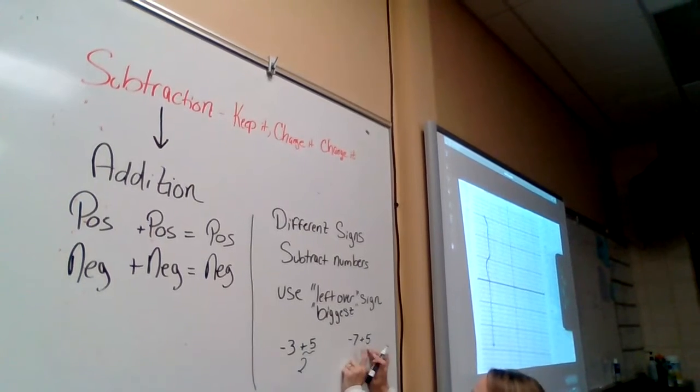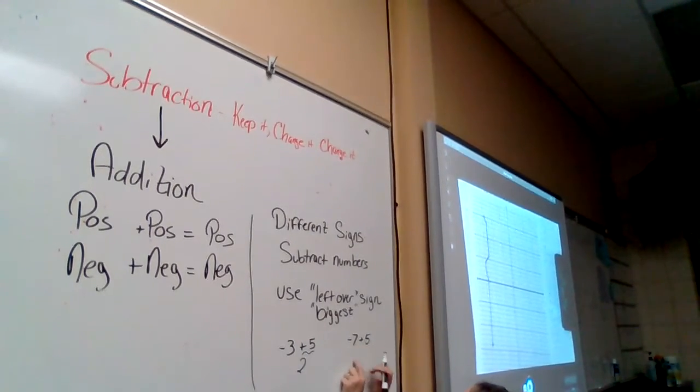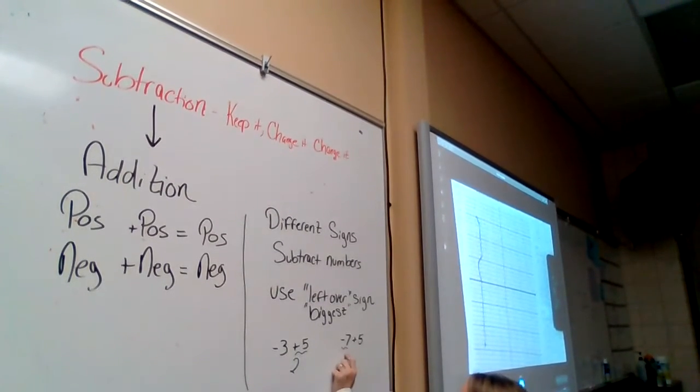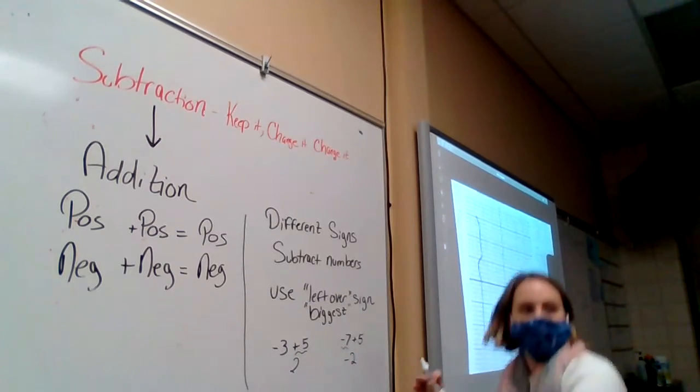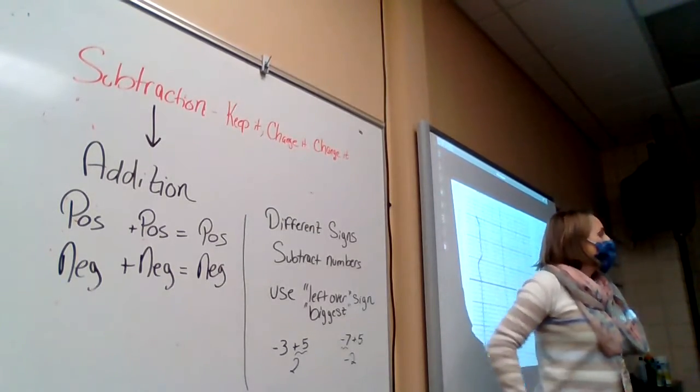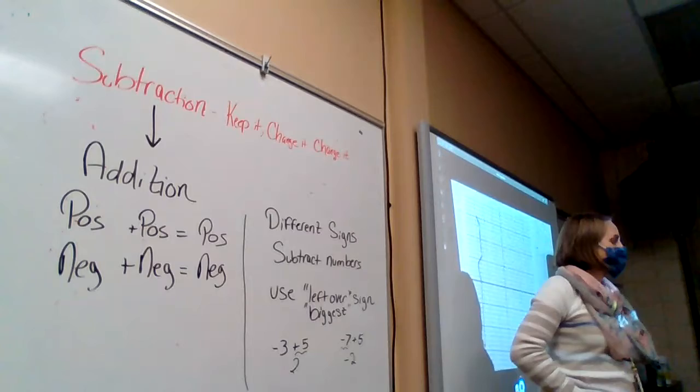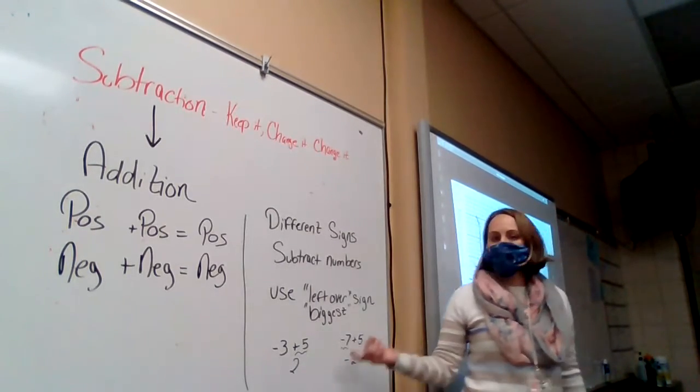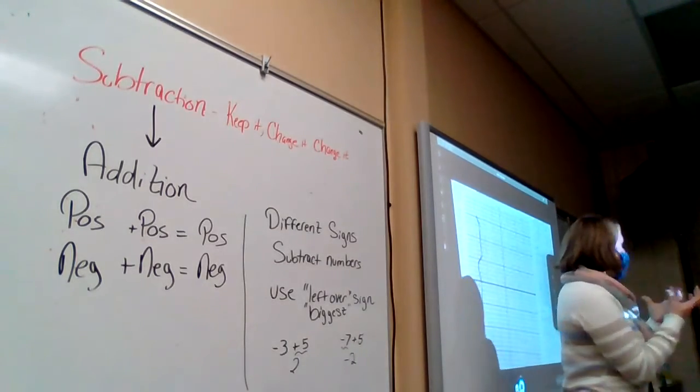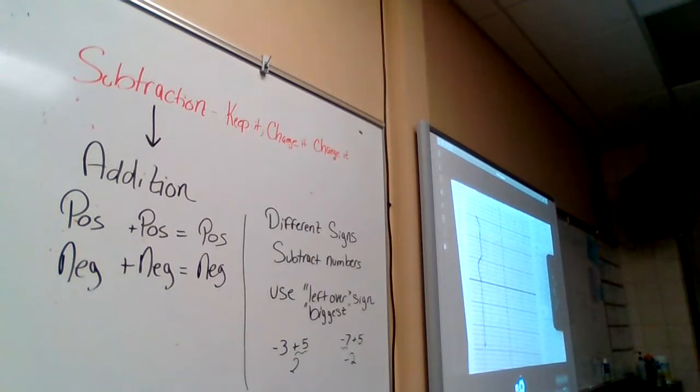And on this one, 7 and 5, which one is bigger? Seven. It's going to have leftovers. So the 7 is bigger, so it's going to be the same sign as the 7. Negative 7 plus 5, we have to subtract. 7 minus 5 is 2, so negative 2. How does this feel? Better? It feels clearer. Now you have something to look at. Awesome.